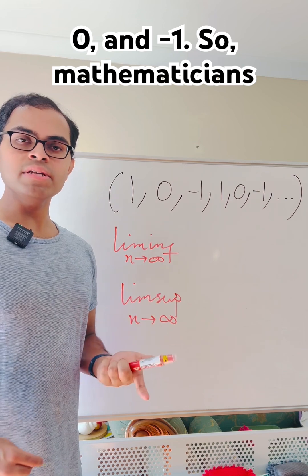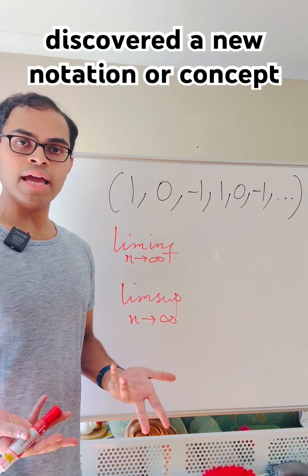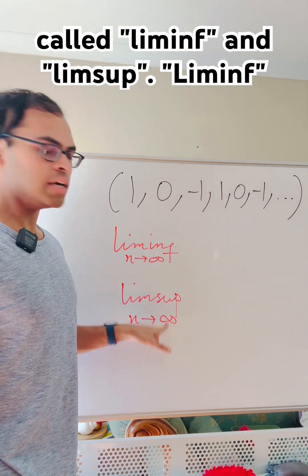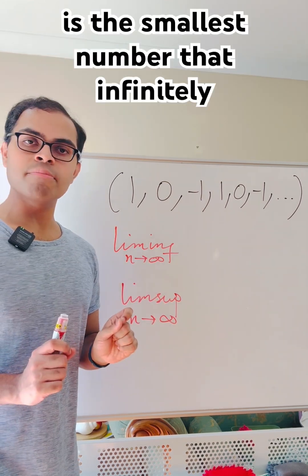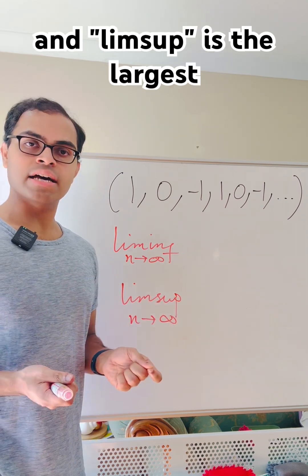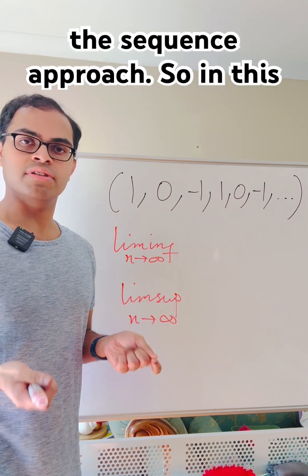So, mathematicians discovered a new notation or concept to capture information about the sequence called lim-inf and lim-sup. Lim-inf is the smallest number that infinitely many terms of the sequence approach. And lim-sup is the largest number that infinitely many terms of the sequence approach.